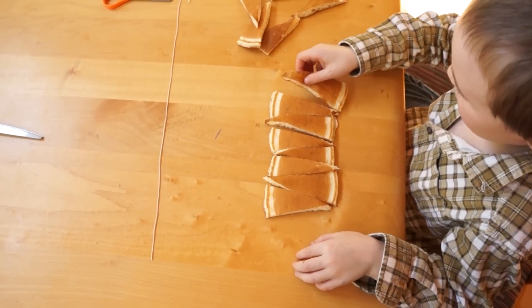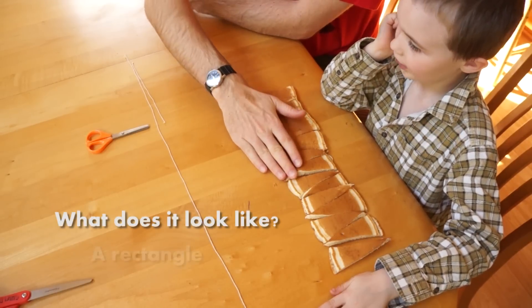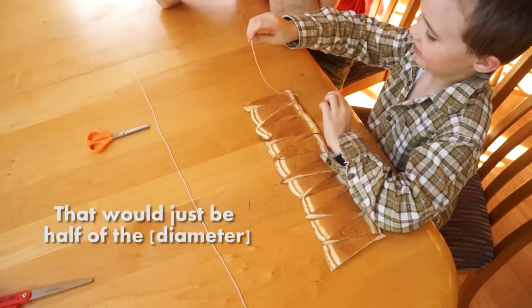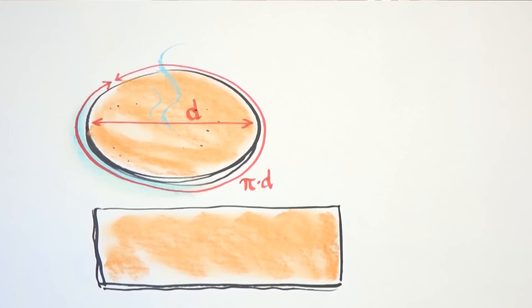And let's see what they make. What does it look like? A rectangle. That would just, I'd say, be half of the circle.